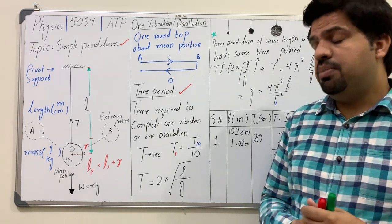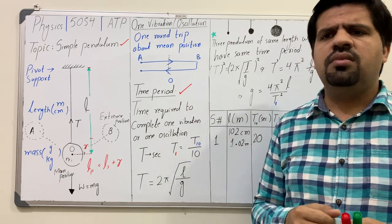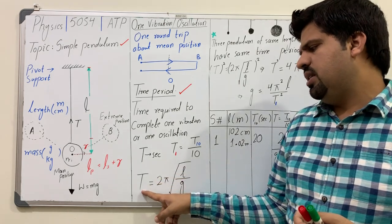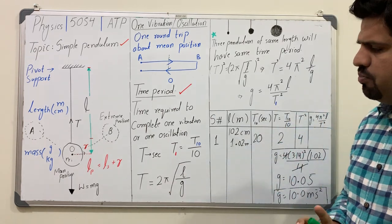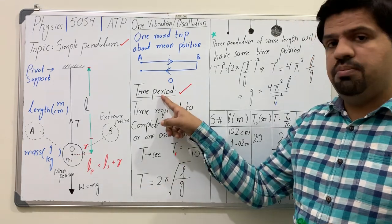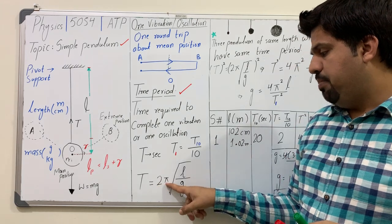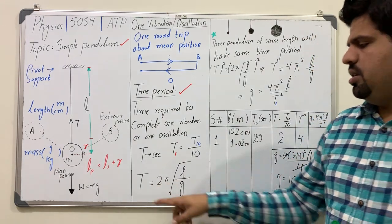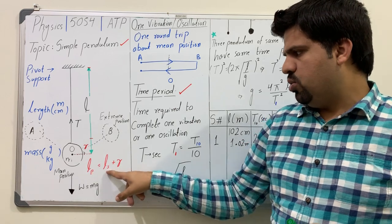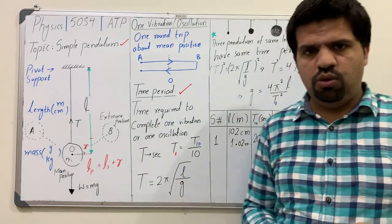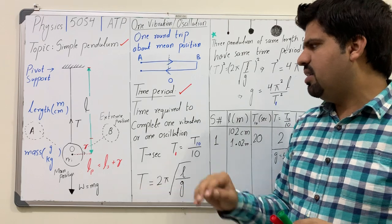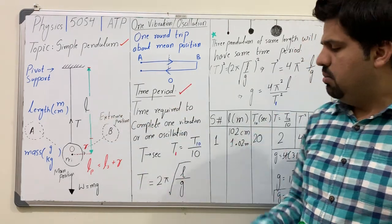The time period of a simple pendulum is given by the formula: T equals 2π times the square root of L over g, where T is the time period, L is the length of the pendulum (length of string plus radius of the ball), and g is the acceleration due to gravity. This formula gives the exact value of the time period if you know the length, since g remains constant.